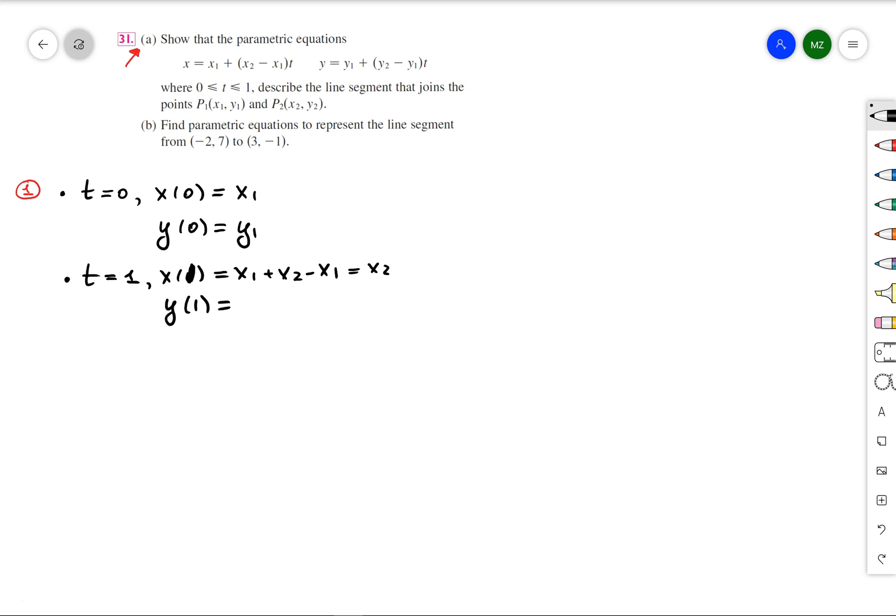So for that, you will evaluate that parametric equation at t equals 0 and observe that you have P1, and at t equals 1 and observe that you have P2.